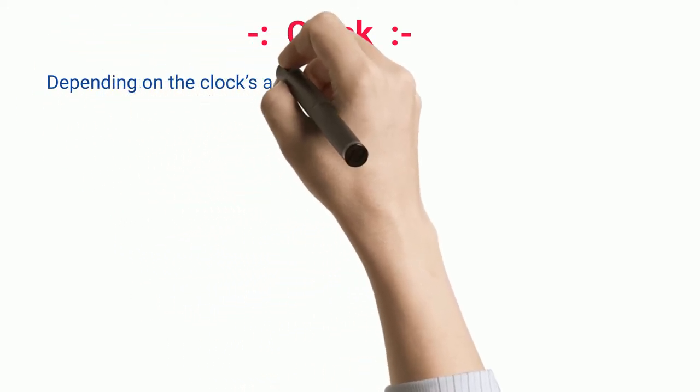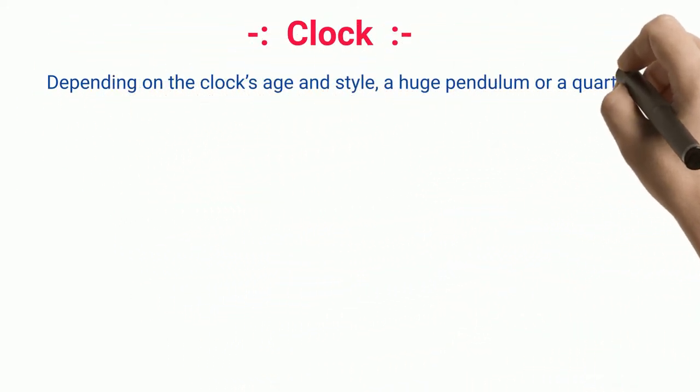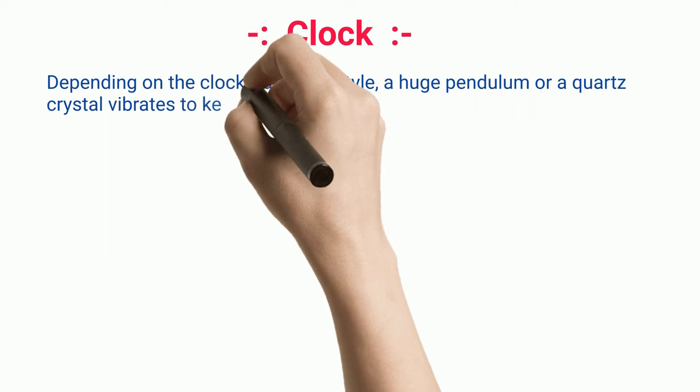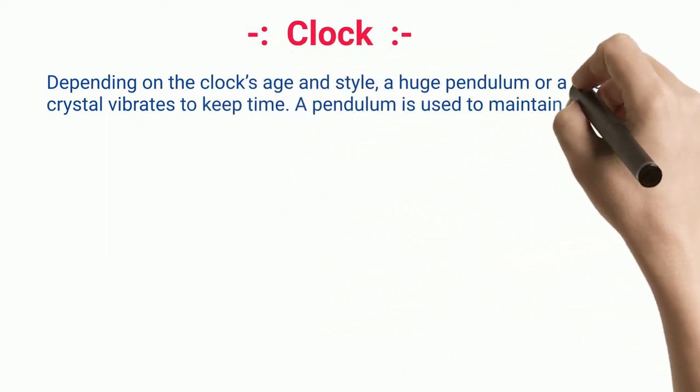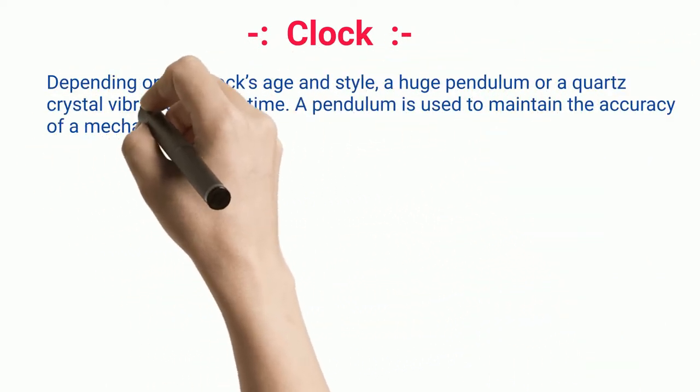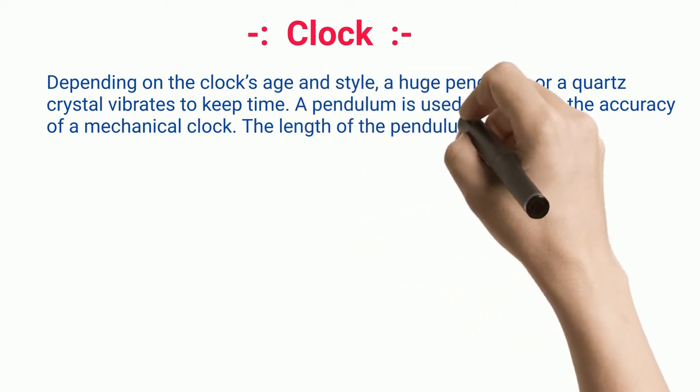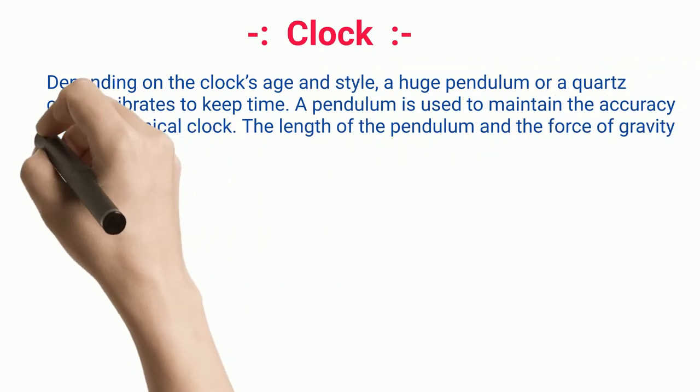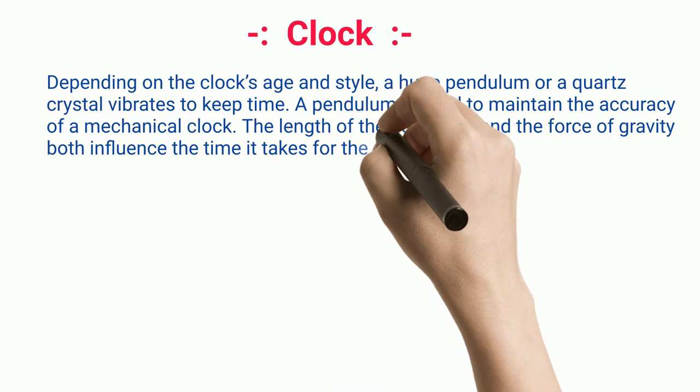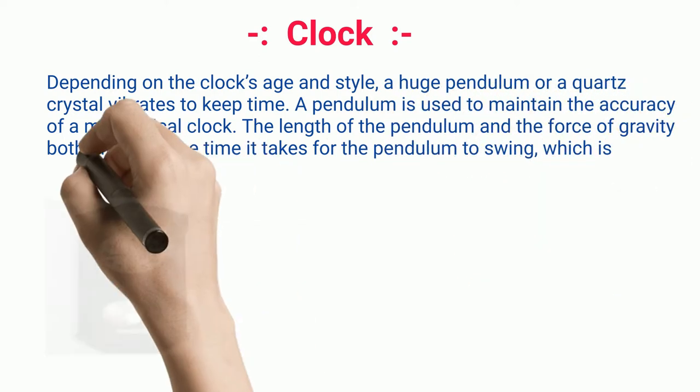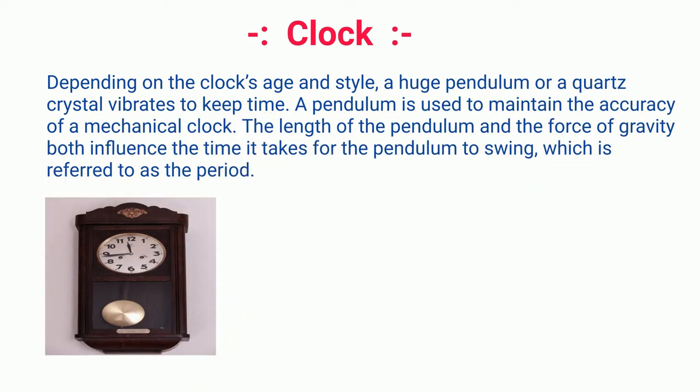Clock: Depending on the clock's age and style, a huge pendulum or a quartz crystal vibrates to keep time. A pendulum is used to maintain the accuracy of a mechanical clock. The length of the pendulum and the force of gravity both influence the time it takes for the pendulum to swing, which is referred to as the period.